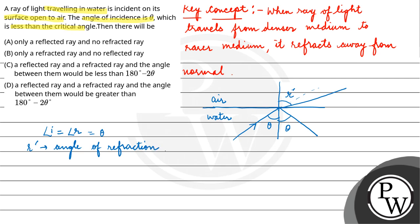Since theta is less than critical angle, that means both parts are there, one is reflected another one is refracted. The refracted ray bends away from normal, that means the angle of refraction is greater than angle of incidence, r dash is greater than theta.